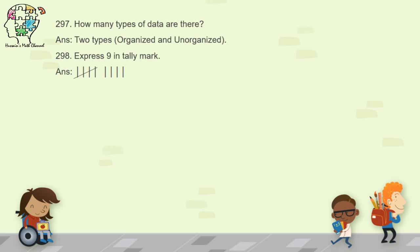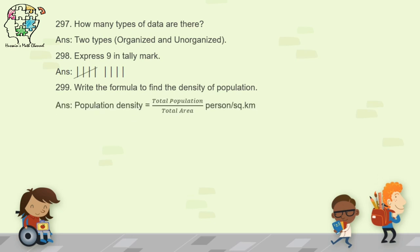Question 299: write the formula to find the density of population. Population density equals total population divided by total area. The unit is person per square kilometer.